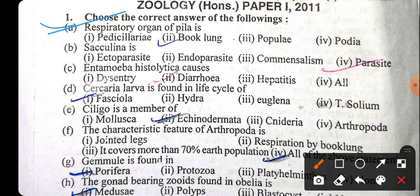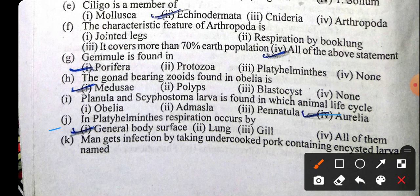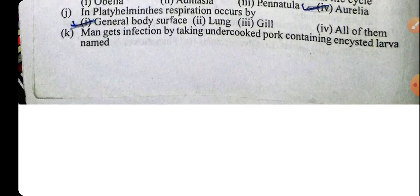So first we have to cover the objective type questions. Respiratory organ of pila — what is the respiratory organ of pila. Kyphoistoma larva is found in which animal life cycle — this answer is aurelia. In platyhelminth, respiration occurs by the general body surface. I get infection by undercooked pork containing encysted larva — undercooked means aadha paka hua bhojan khane se, infection from which larva.